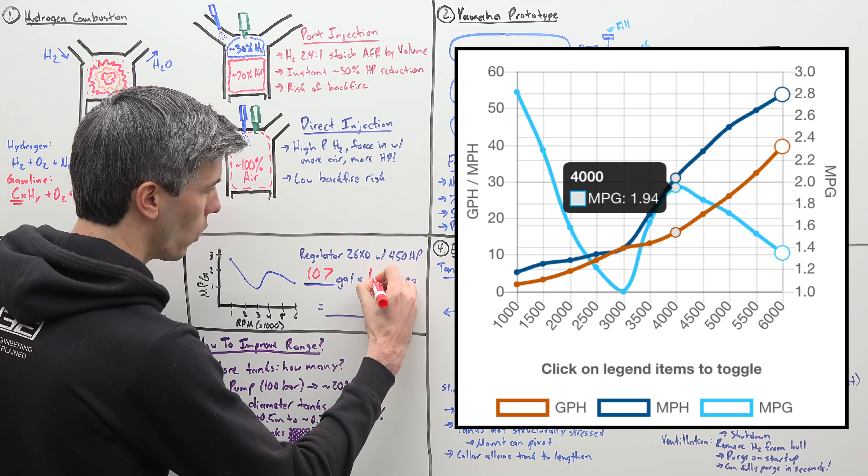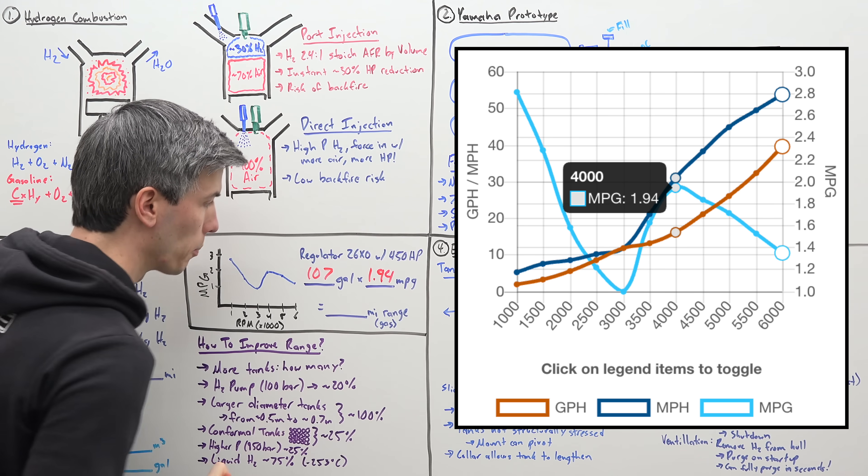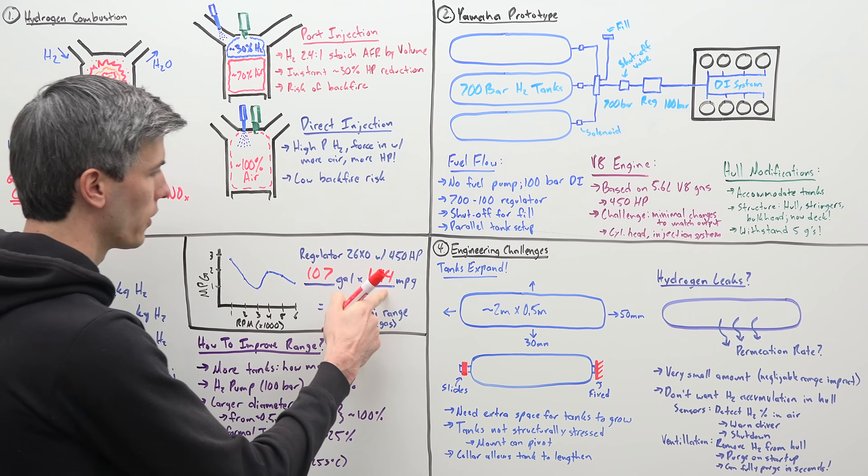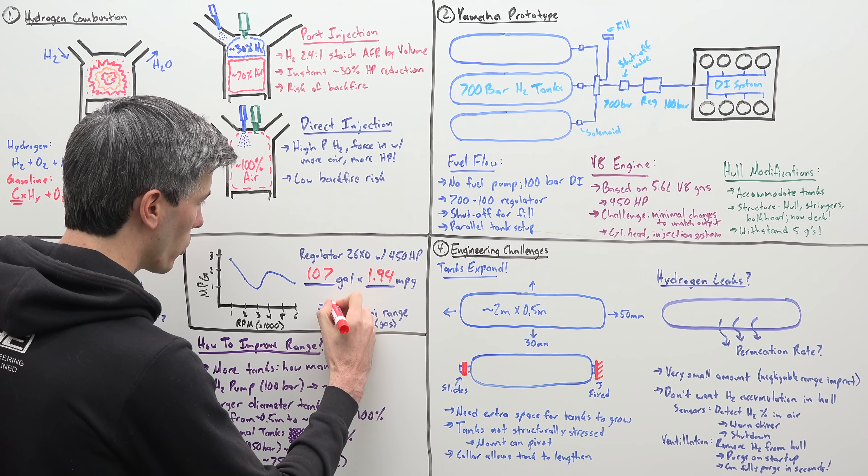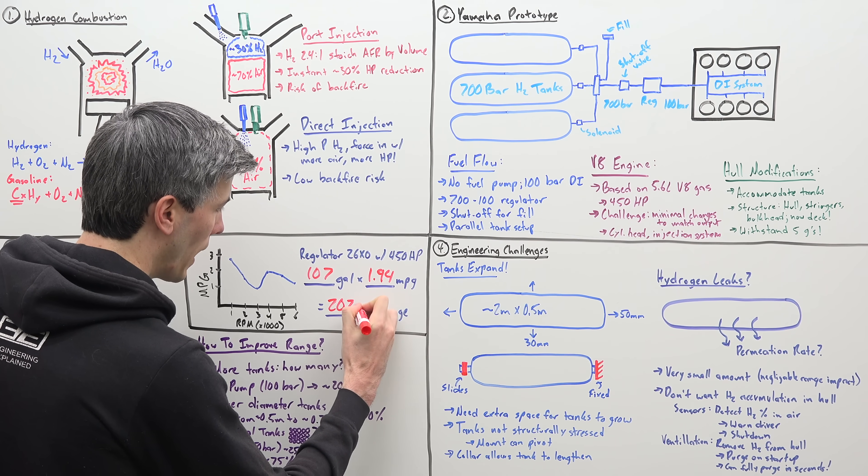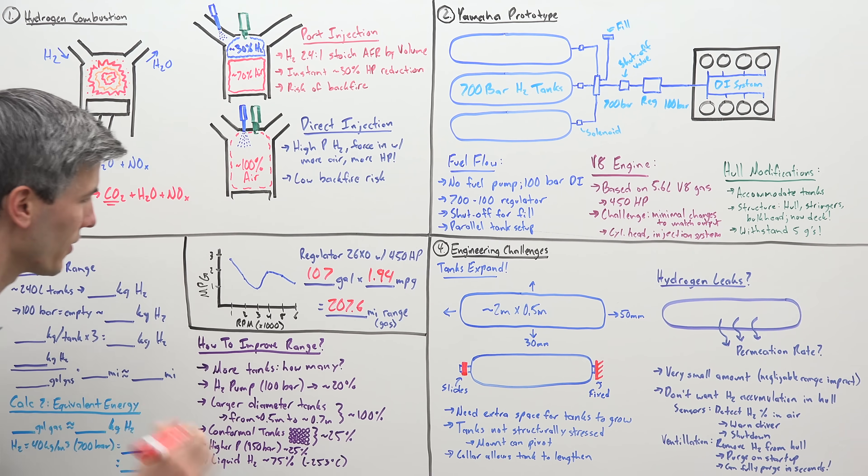This thing will get 1.94 miles per gallon. So, multiply the number of gallons by your MPG and we get a total range for the gas boat at about 207.6 miles.